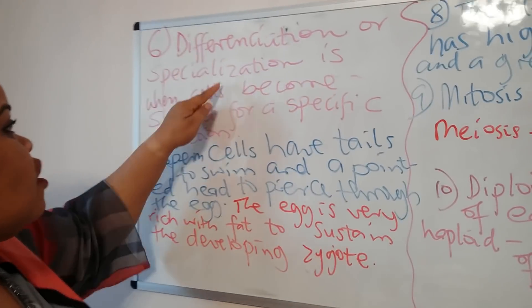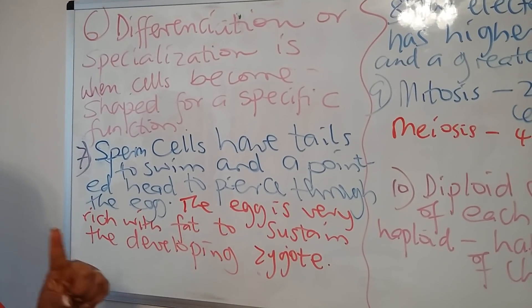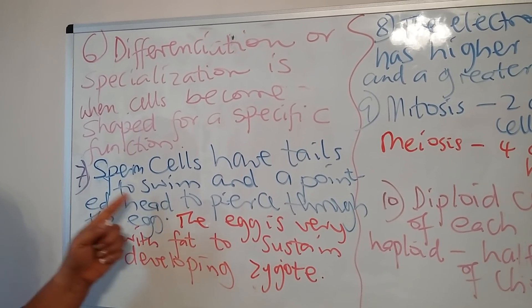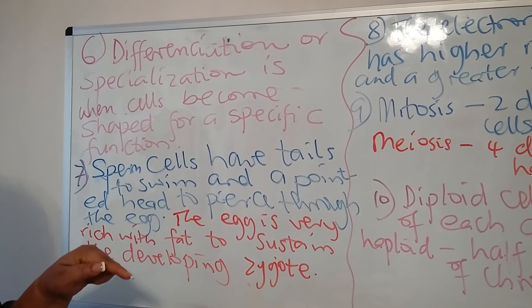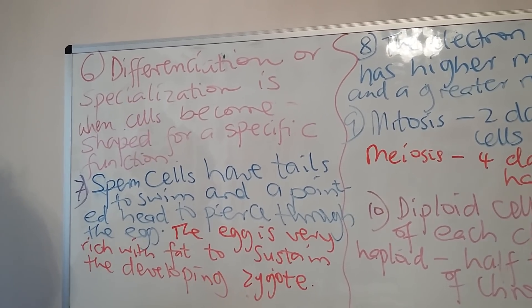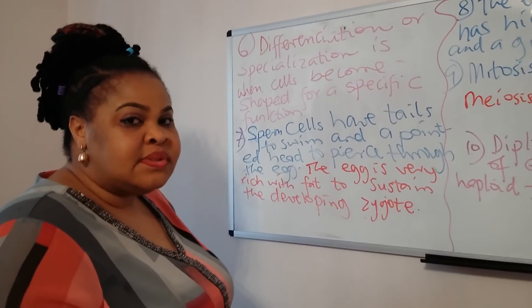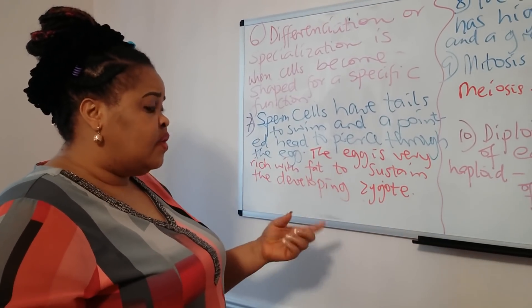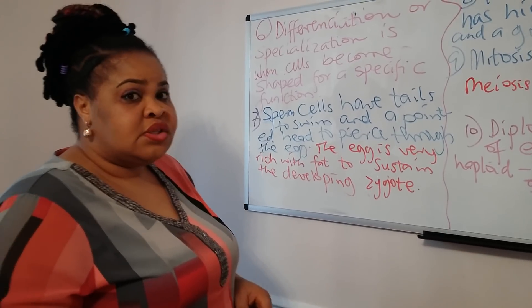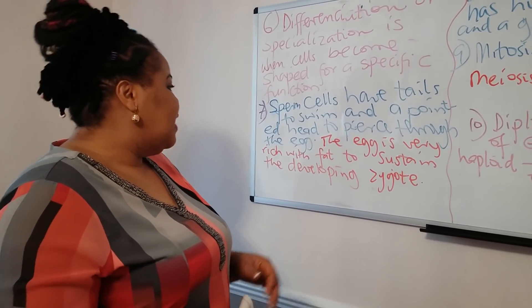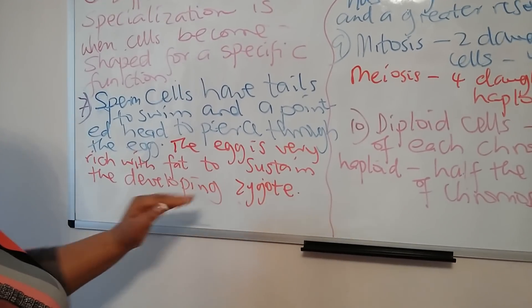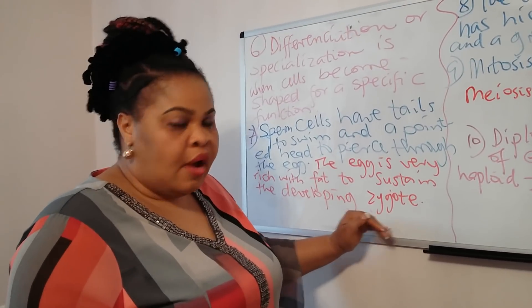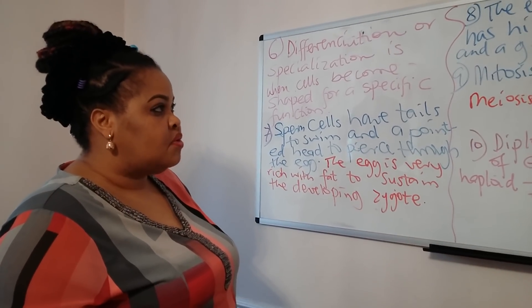Number six: differentiation or specialization is when cells become shaped in a specific way for a specific function. For example, the sperm cell is a specialized cell. It has a tail for swimming to reach the egg and a pointed head to pierce through the egg. It also has enzymes in the head which it uses to dissolve the wall of the egg cell in order to successfully pierce through. The egg cell is very rich in fat to sustain the developing zygote before it turns into a fetus and attaches itself to the mother via the umbilical cord, through which it gets nutrients and oxygen.